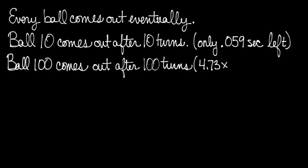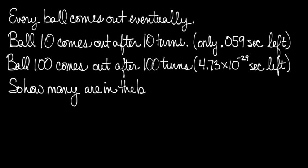Ball 100 comes out after 100 turns. And I don't even know how small that amount of time is, but I looked it up on the internet. 4.73 times 10 to the negative 29 seconds left, you're going to pull out the 100th ball. I said there was no limit to the number of times that you could subdivide the time you have left. And that means every single ball comes out eventually.